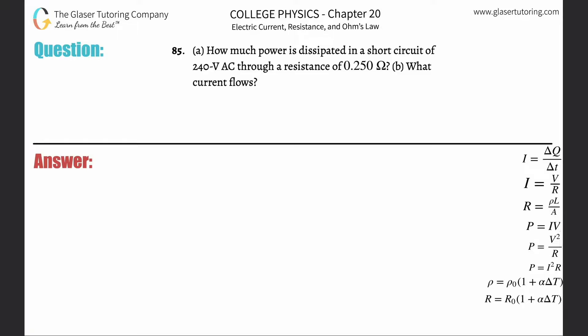Number 85, letter A. How much power is dissipated in a short circuit of 240 volts of alternating current through a resistance of 0.25 ohms?